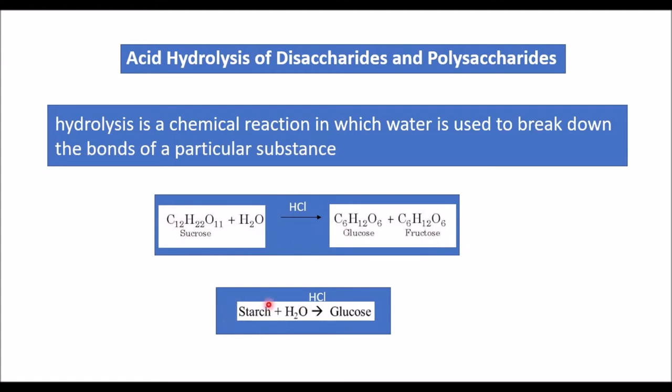Starch is an example of polysaccharide which is made up of many glucose units. Acid hydrolysis of starch produces smaller saccharides such as maltose. Eventually, the hydrolysis reaction converts maltose to glucose molecules.